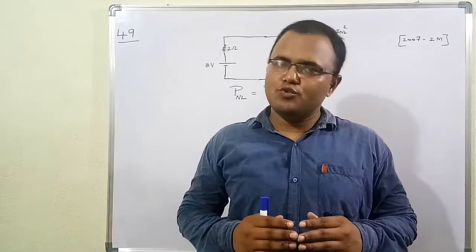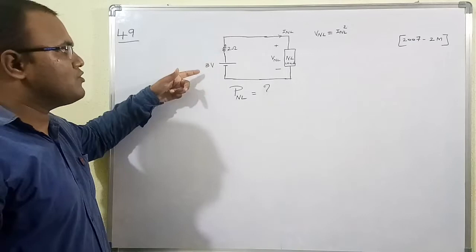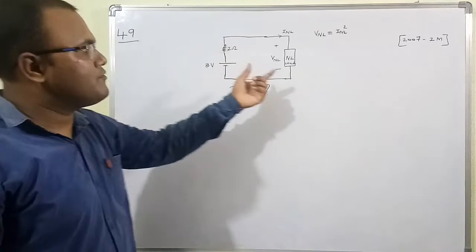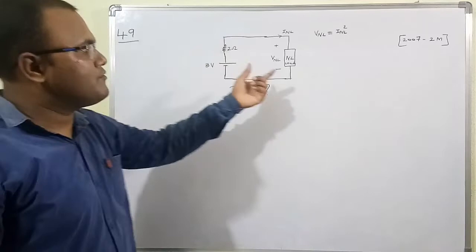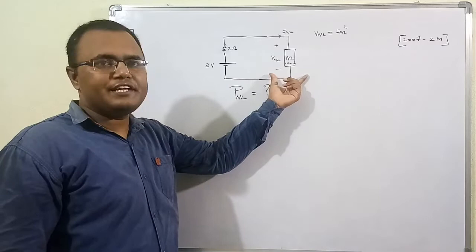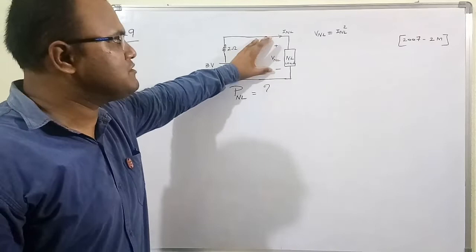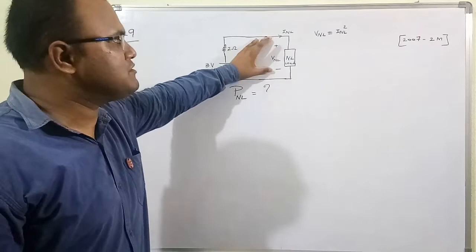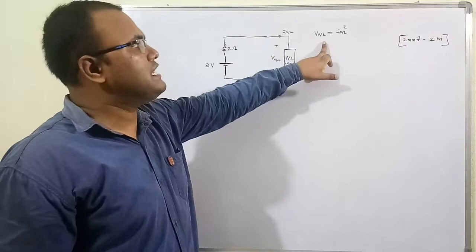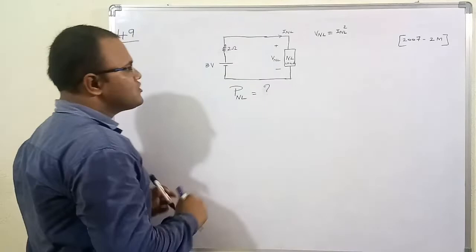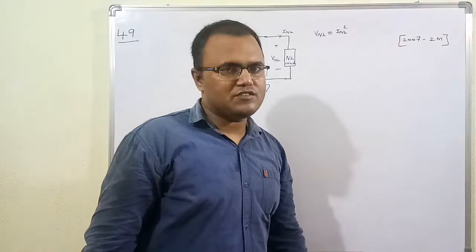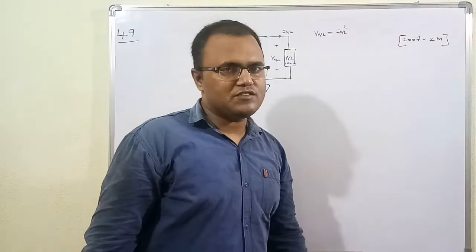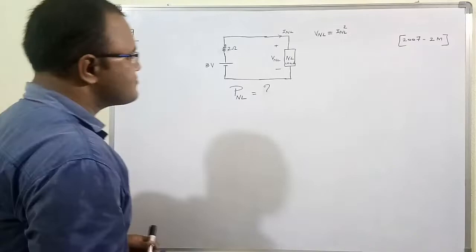Now let's move to problem 49. A practical voltage source has 3 volt and internal resistance of 2 ohm. A non-linear load is connected with voltage VNL and current INL. The relationship is VNL equals INL squared. This question is from GATE 2007 for 2 marks. The aim is to find the power consumed by the non-linear load.